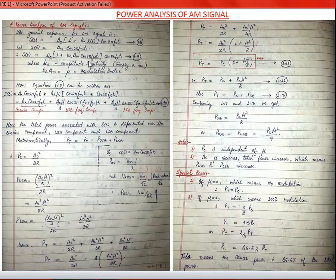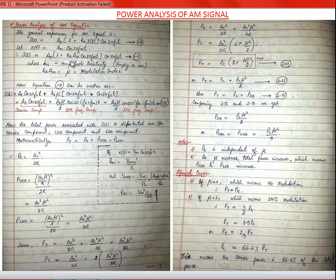Now, the power analysis of the AM signal. The general expression for the AM signal is S(t) = A_C·[1 + k_a·X(t)]·cos(2π·f_c·t), where X(t) is the message signal given by A_m·cos(2π·f_m·t). Substituting this value, S(t) = A_C·[1 + k_a·A_m·cos(2π·f_m·t)]·cos(2π·f_c·t).